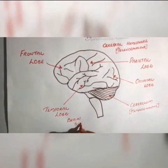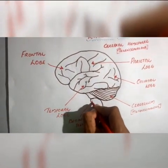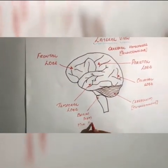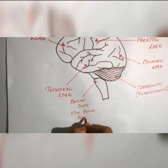Here we have the brain stem, which consists of three parts: the midbrain, pons, and the medulla oblongata.